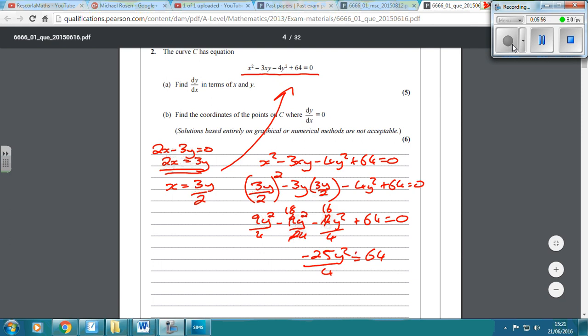Sorry, plus 64 equals 0. Then I'm going to move this over to the other side. So I've got 64 equals 25y squared over 4. I could times 3 by 4, divide it by 25. And in doing that, I get y squared equals 256 over 64.